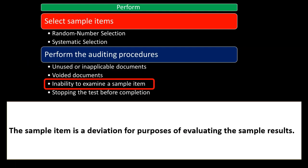Regarding inability to examine a sample item: if we go through our process looking for the purchasing document and we have an inability to get it — we can't find it for whatever reason — the sample item is a deviation for purposes of evaluating the sample results. If we can't find a document that should have the initials on it and we should be able to find it, we're going to consider that a deviation.